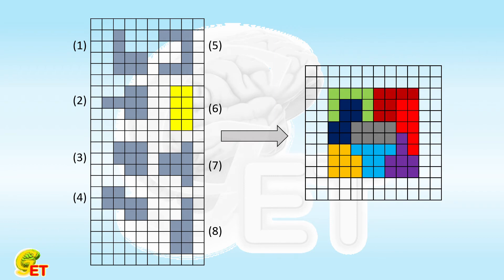And at last, the easiest one is number 6, as it has the most regular shape. So we make it.